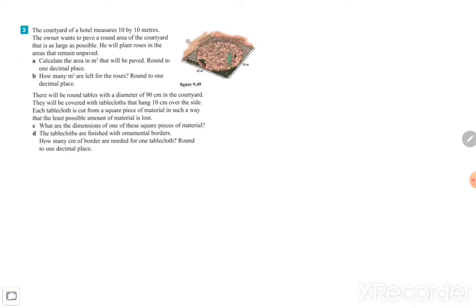Question A is to calculate the area in square meters that will be paved, rounded to one decimal place. So that's a circle. What you see there is paved, so we need to calculate the area. It is a circle, so we need to know the area of a circle.